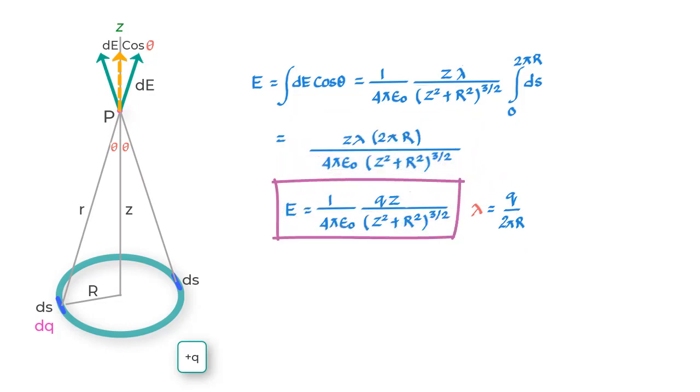You can see that we have taken Q as a positive charge on the ring to do the derivation. But if we take it as a negative charge, E value would become negative indicating that the direction of the field is downwards towards the ring instead of upwards that it is with a positive Q charge.